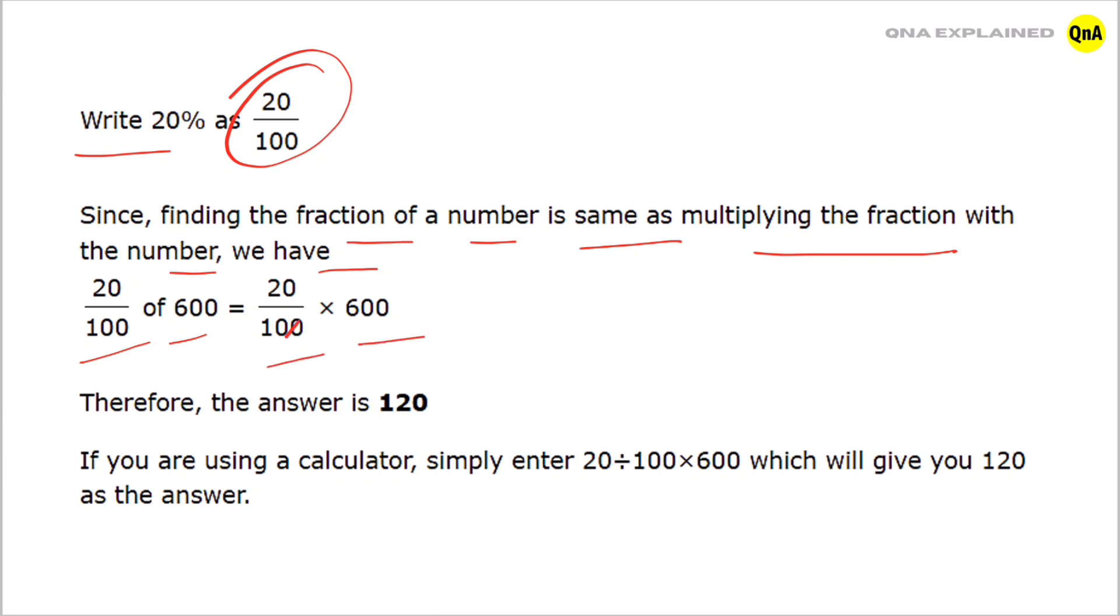First cancel out zeros. After cancel out zeros we get 2 multiply by 60. 6 times 2 are 120. Therefore the answer is 120. If you are using a calculator, simply enter 20 divide by 100 into 600, which will give you 120 as the answer.